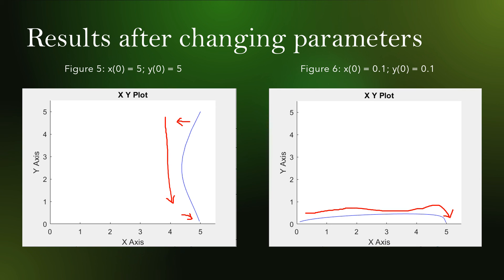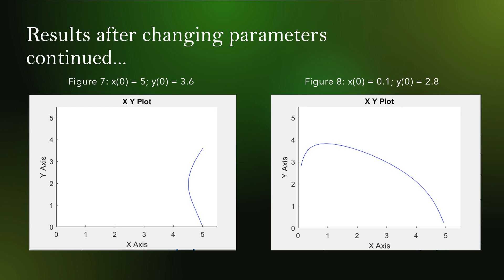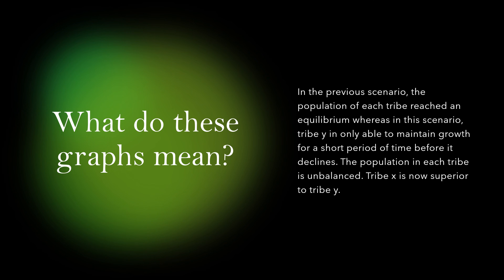Eventually, tribe Y goes extinct while tribe X flourishes. Continuing from the last slide, figures 7 and 8 follow the same trend where tribe Y dies off and tribe X thrives. The only difference is these graphs have a different initial population value than figures 5 and 6. The difference between this scenario and the previous one is that this time the populations of tribe X and Y equilibrate at an unequal number of members. Tribe Y is not able to maintain any serious growth. Since tribe Y is no longer a threat to tribe X and just serves as a food source, we see tribe X prosper.